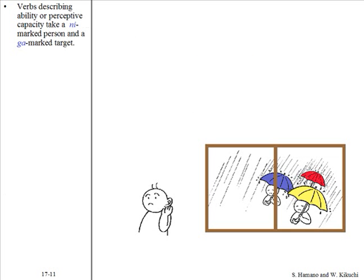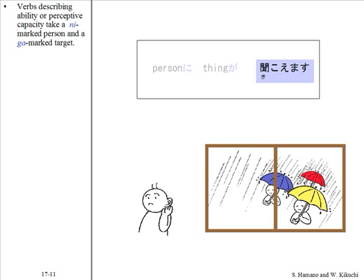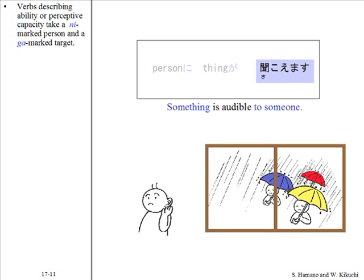Verbs describing ability or perceptive capacity take a ni-marked person and a ga-marked target. For example: Watashi ni ame no oto ga kikoemasu. This category includes miemasu, wakarimasu, and dekimasu.